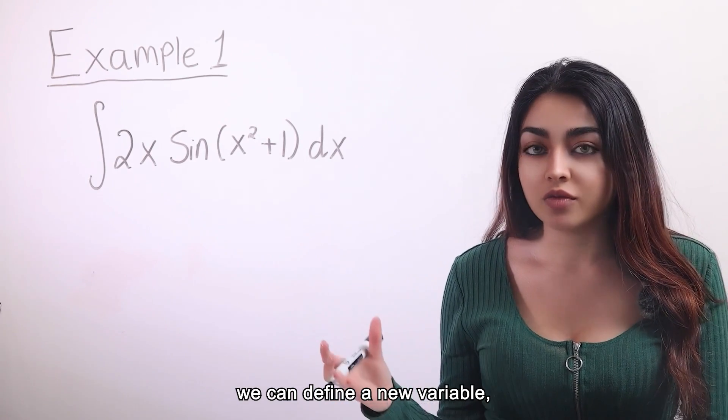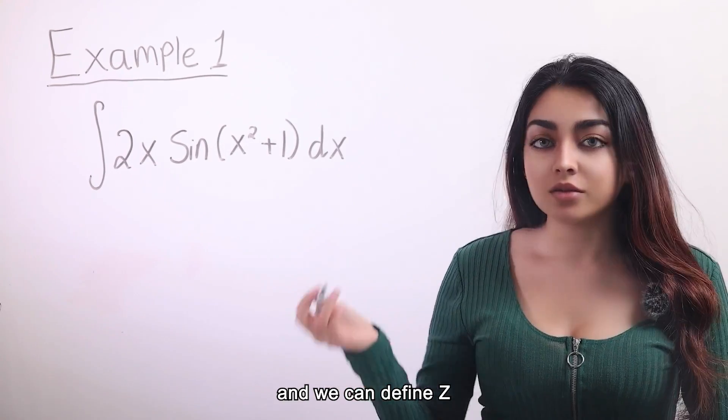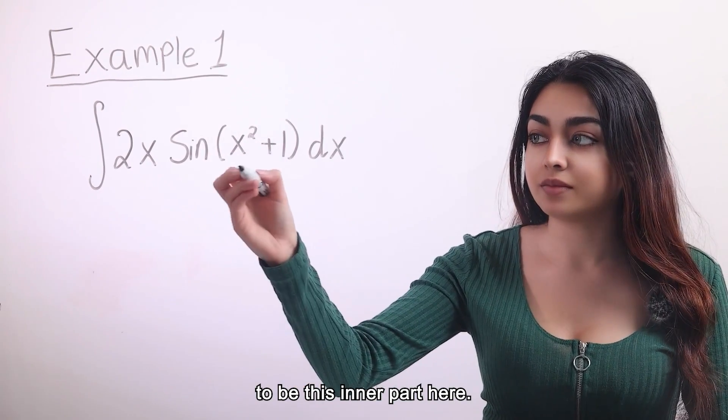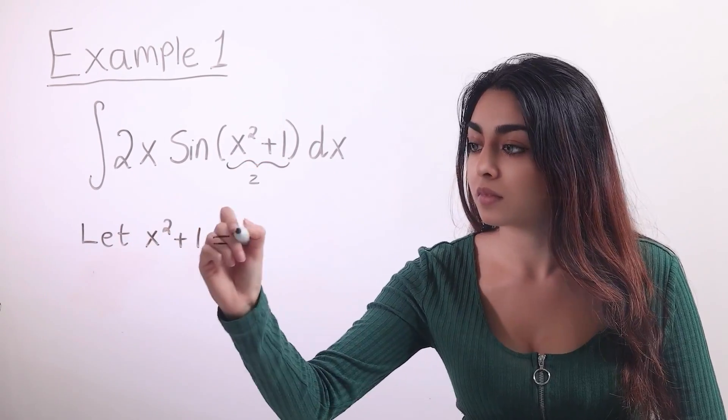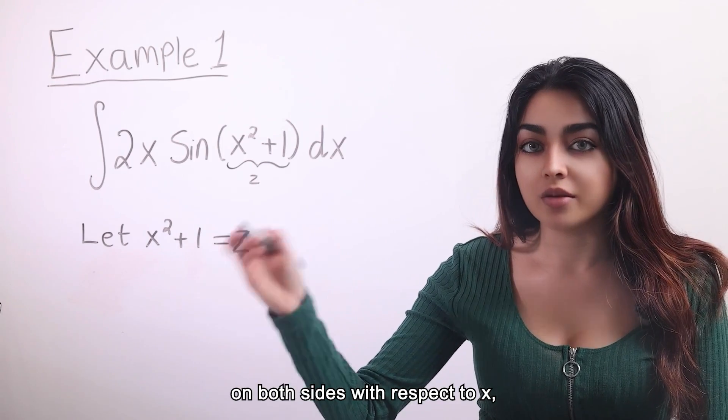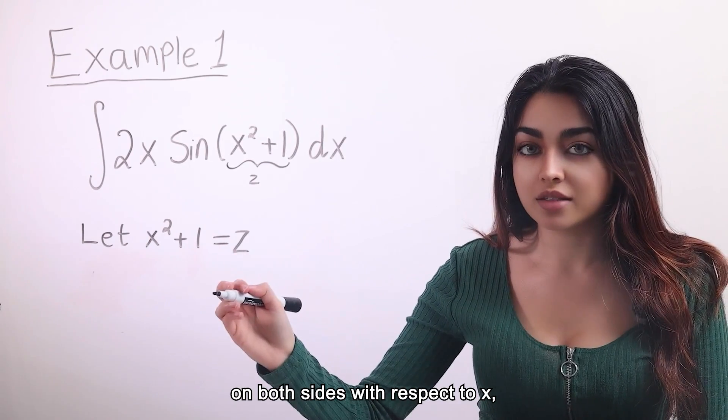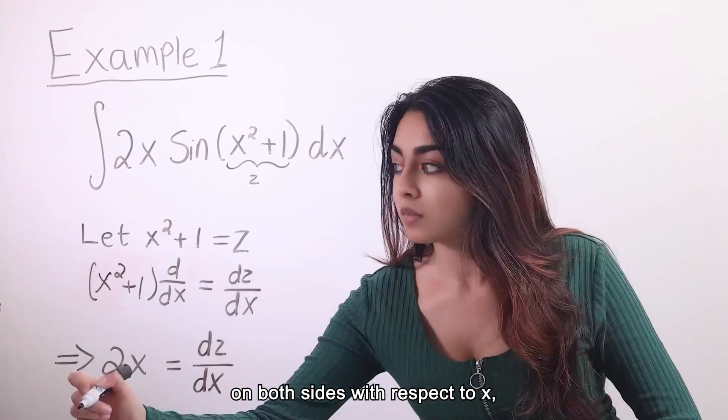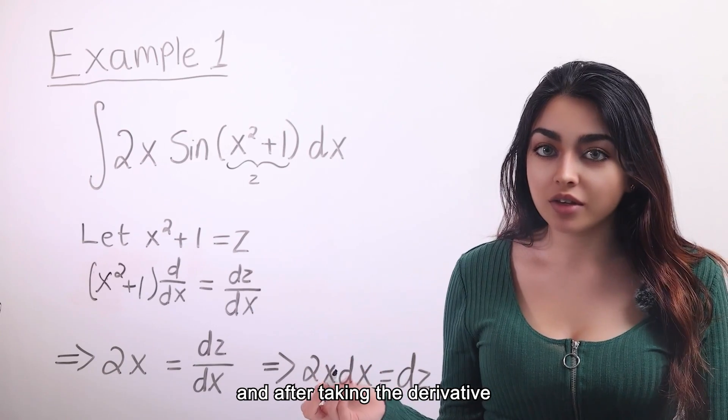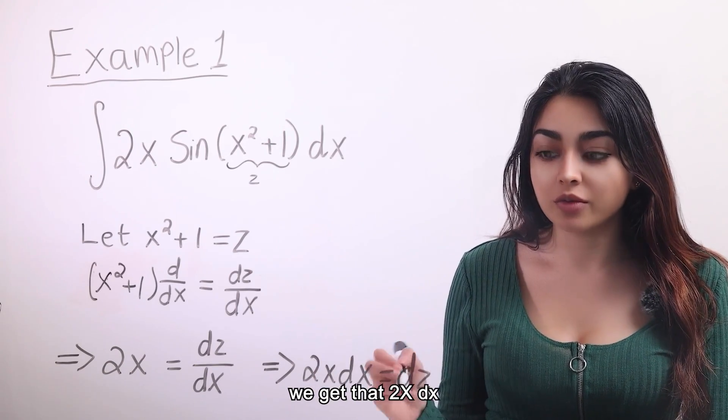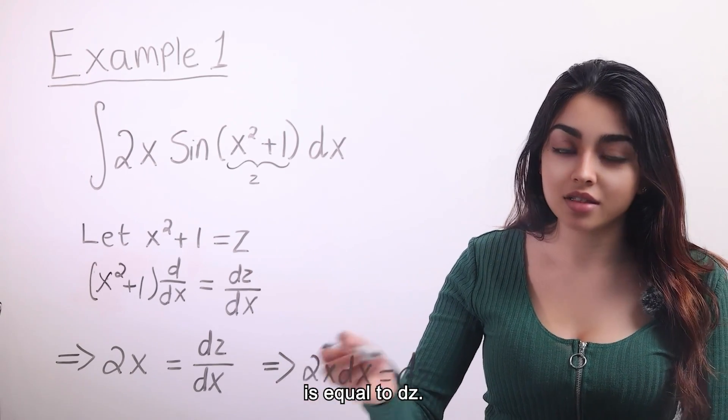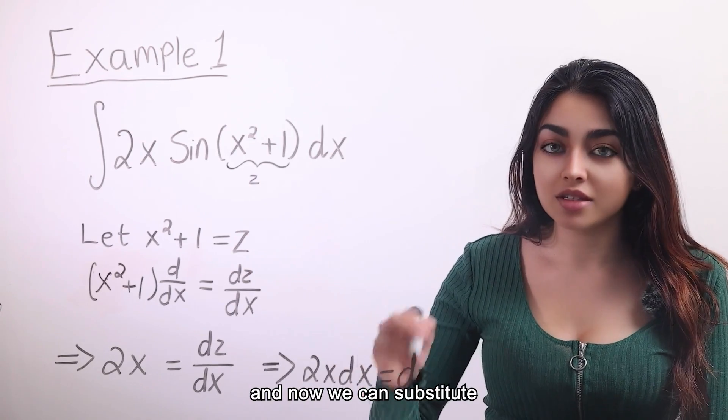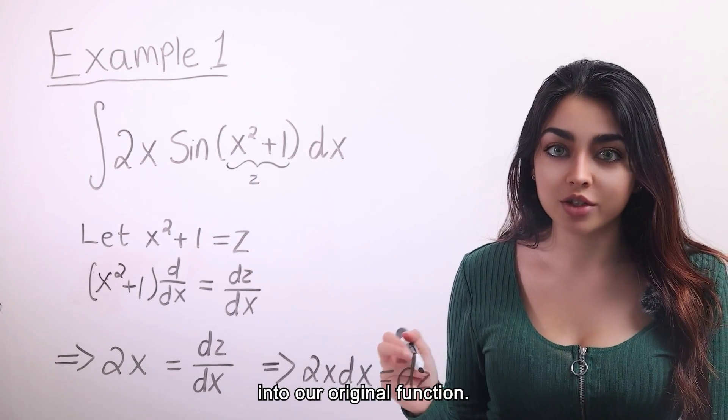So in this example, we can define a new variable, let's call it Z. And we can define Z to be this inner part here. So now we can take the derivative on both sides with respect to X. And after taking the derivative and with a little bit of algebra, we get that 2x dx is equal to dz. And now we can substitute this back into our original function.